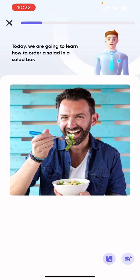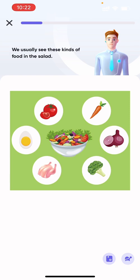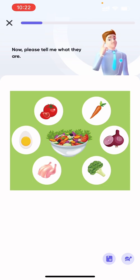Today, we are going to learn how to order a salad in a salad bar. Take a look at the picture. We usually see these kinds of food in the salad. Now please tell me what they are. Here are tomatoes, eggs, chicken, broccoli, onions, and carrots.